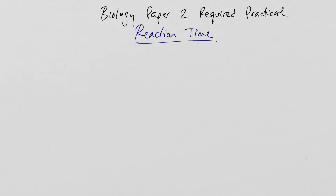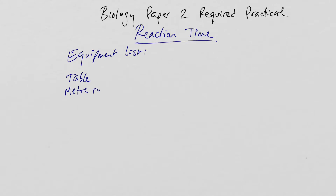Of the four required practicals on biology paper two, the reaction time one is the most straightforward in terms of equipment and method. But it's also one where they can really easily integrate numeracy, so if you get a reaction time practical, look out for the numeracy questions — particularly the different ideas between median and mean and anomalous results. The equipment list is really straightforward: essentially all you need is a table and a meter ruler.